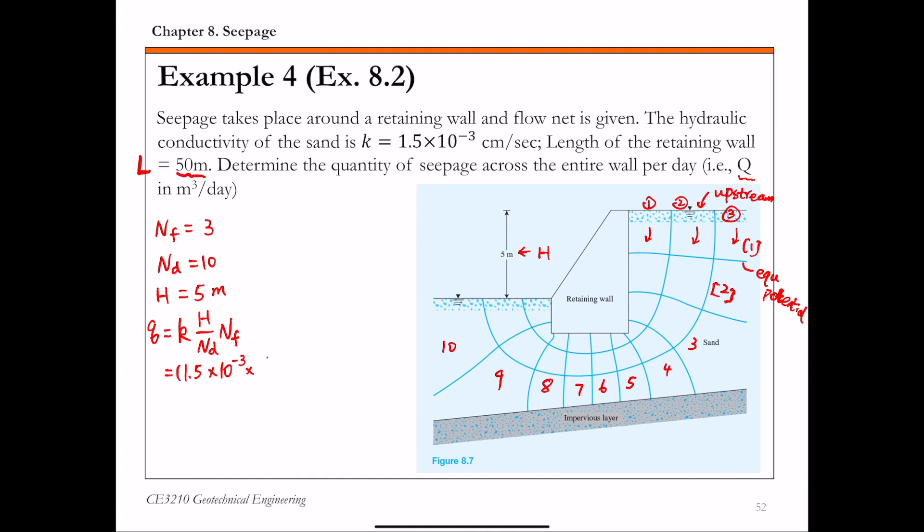Converting to meters per second, that's the centimeter to meter conversion, times H which is 5, times NF over ND. That gives us 2.25 times 10 to the negative 5 cubic meters per second per meter.